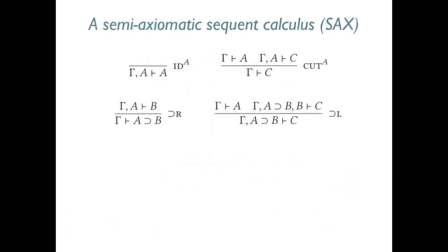The semi-axiomatic sequent calculus starts with the same rules as G3 but replaces the implication left rule with an axiom, namely, from antecedents A and A implies B, the consequent B can be established.